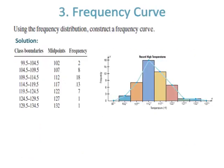Number three is frequency curve. Using the frequency distribution, construct a frequency curve. Use the same histogram approach but use midpoints instead of class boundaries on the x-axis and frequency on the y-axis. Use 9 values: subtract 5 from the lowest midpoint (102) to get 97, and add 5 to the highest midpoint (132) to get 137, making 9 values for constructing the frequency curve.